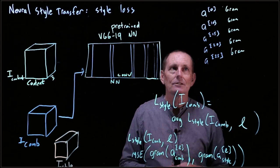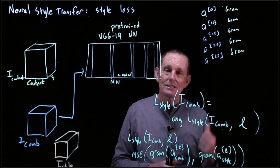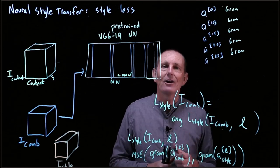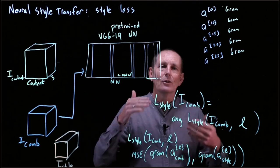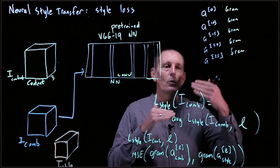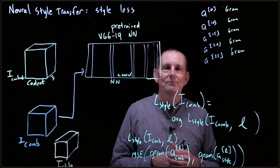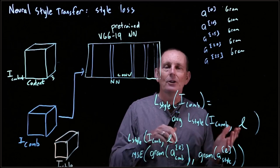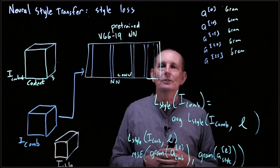That is our style loss. Once we have the style loss, combined with the content loss we've already seen, we do a weighted sum of both to get the total loss, then perform gradient descent.